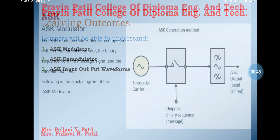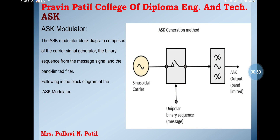First, what is ASK? ASK means Amplitude Shift Keying. It is a type of digital modulation that represents digital data as a variation in the amplitude of a carrier wave. The amplitude of an analog carrier signal varies with the bit stream, while the frequency and phase are kept constant.